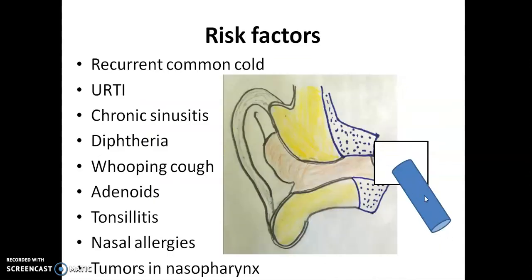The most common route is the eustachian tube route. Whenever someone has recurrent common cold, upper respiratory tract infection, chronic sinusitis, diphtheria, whooping cough, adenoids (nasopharyngeal tonsil inflammation, especially in pediatric age), or tonsillitis (palatine tonsil inflammation in the oropharynx) — both can block the eustachian tube. This prevents ventilation and drainage of mucus from the middle ear, causing it to accumulate and act as a growth medium for bacteria. Nasal allergy and tumors of the nasopharynx also block the eustachian tube.